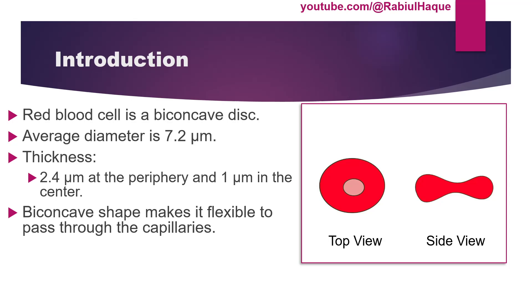The average lifespan of red blood cells is around 120 days, plus or minus 30 days.